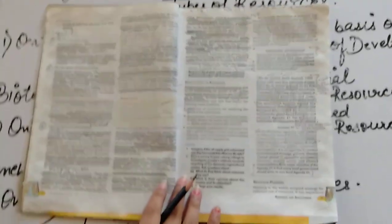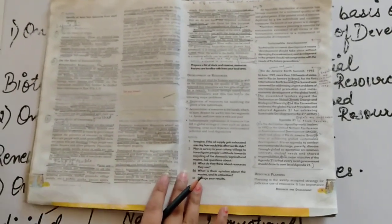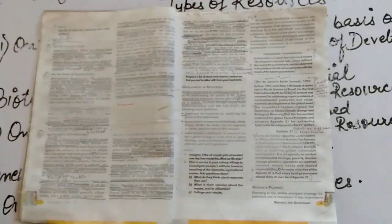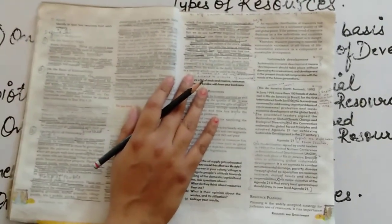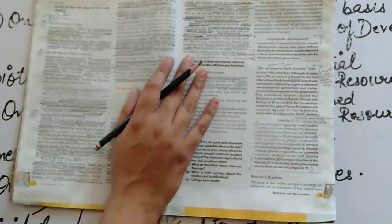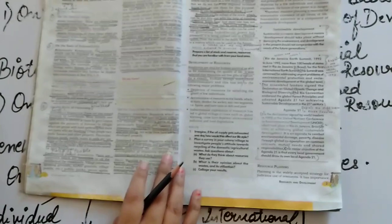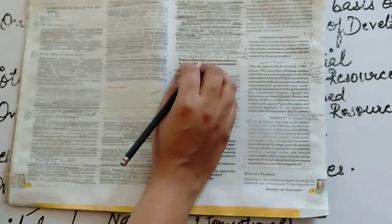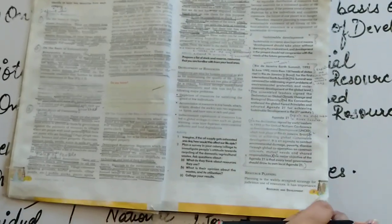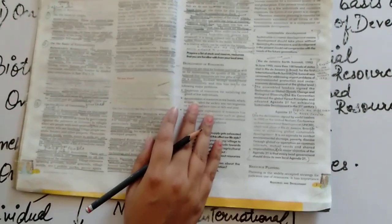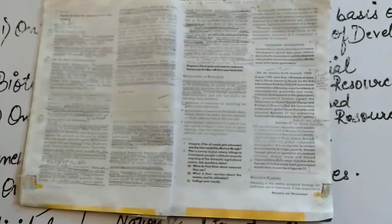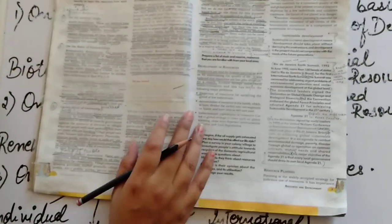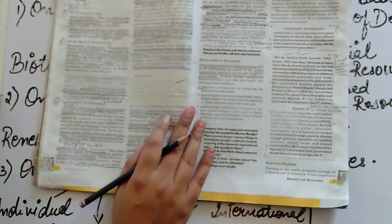With all these things, we can say that the further use of resources should be done in a sustainable manner. In our next video, we are going to understand what is sustainable development and how the resource planning can be done for the further distribution. Till then, stay safe, stay home. Thank you.